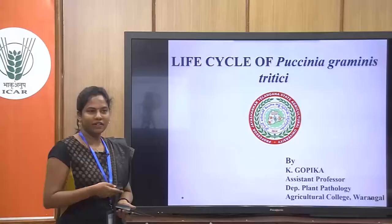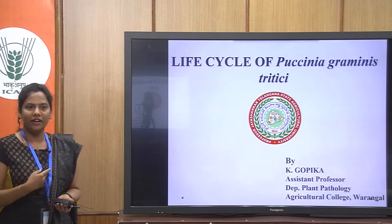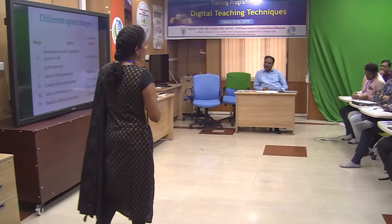Our topic is the life cycle of Puccinia graminis tritici. This fungus is a heteroecious rust — we have already discussed what is meant by heteroecious and autoecious rust in our last class. A heteroecious rust is a fungus which completes its life cycle on two different hosts. Puccinia graminis tritici is a heteroecious fungus and it produces five types of spores.